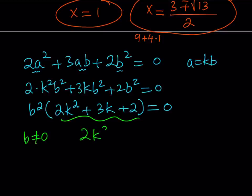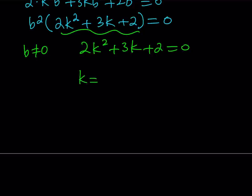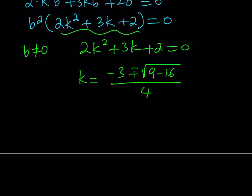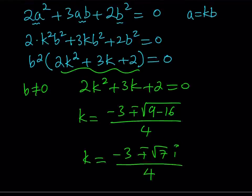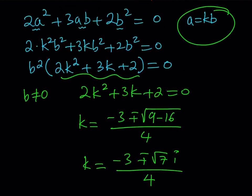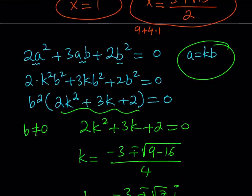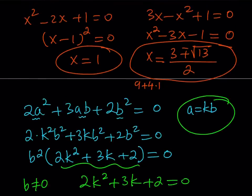Applying the quadratic formula to 2k² + 3k + 2 = 0: the discriminant is 9 - 4(2)(2) = 9 - 16 = -7. Since the discriminant is negative, k gives only complex values: k = (-3 ± √7·i) / 4. This means the second factor produces no real solutions for x.